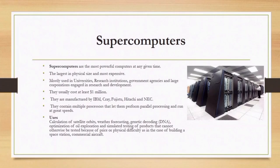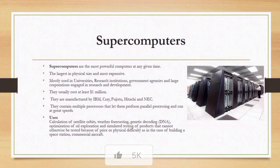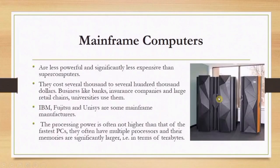Supercomputers contain multiple processors that let them perform parallel processing and run at greater speed. Uses of supercomputers include: calculation of satellite orbits, weather forecasting, genetic decoding or DNA optimization, oil exploration, and simulated testing of products that cannot otherwise be tested because of price or physical difficulty — such as building a space station or commercial aircraft. Here is an image showing a type of supercomputer.